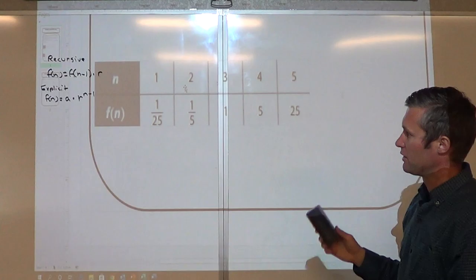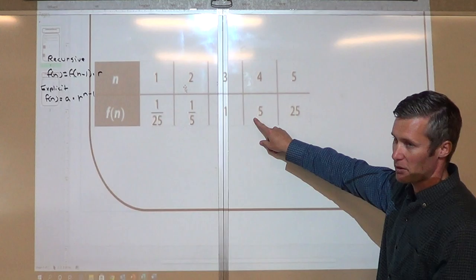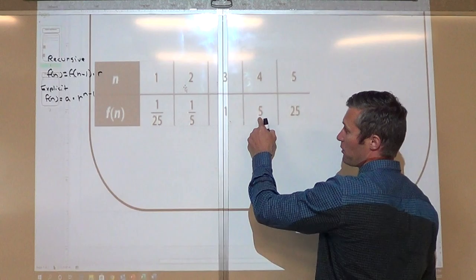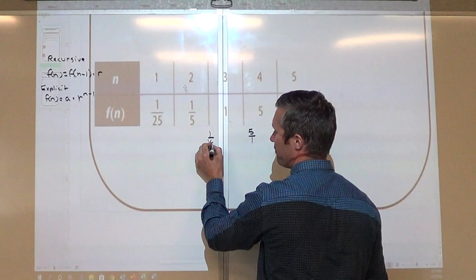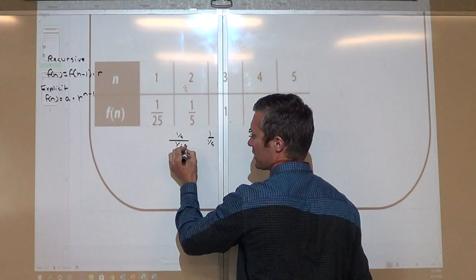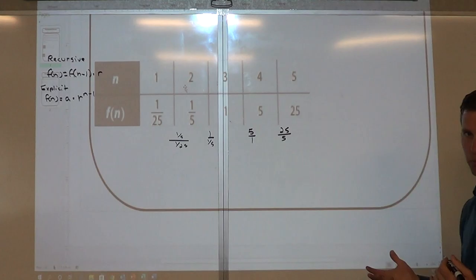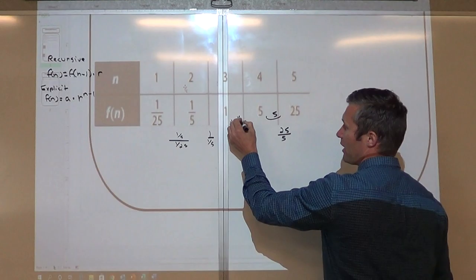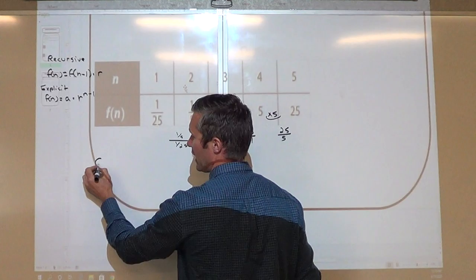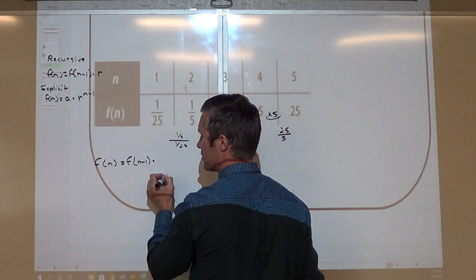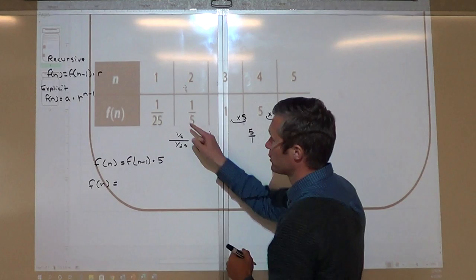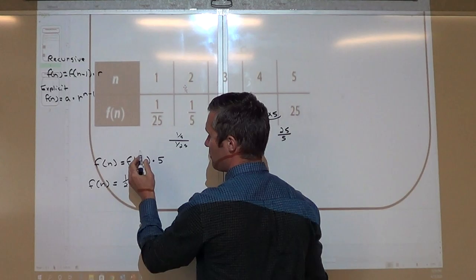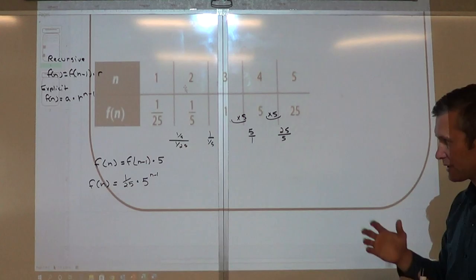Now we have the sequence 1/25, 1/5, 1, 5. How do I go from 1 to 5? I'm multiplying by 5. If you're not sure, just take the term and divide it by the term in front of it: 5 divided by 1, or 1 divided by 1/5, or 1/5 divided by 1/25 — you can do that on your calculator. So my common ratio is 5. The recursive formula is f(n) = f(n−1) × 5. For the explicit, f(n) equals my first term, 1/25, times my ratio of 5 to the n minus 1.